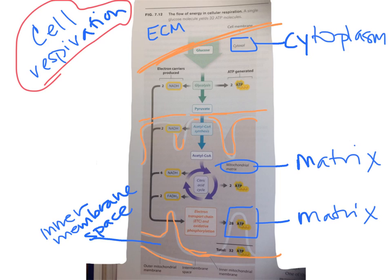That's pyruvate processed to two acetyl-CoA's. Those acetyl-CoA's, two of them, are sent through the Krebs cycle. In the process of glycolysis, we get two ATP.